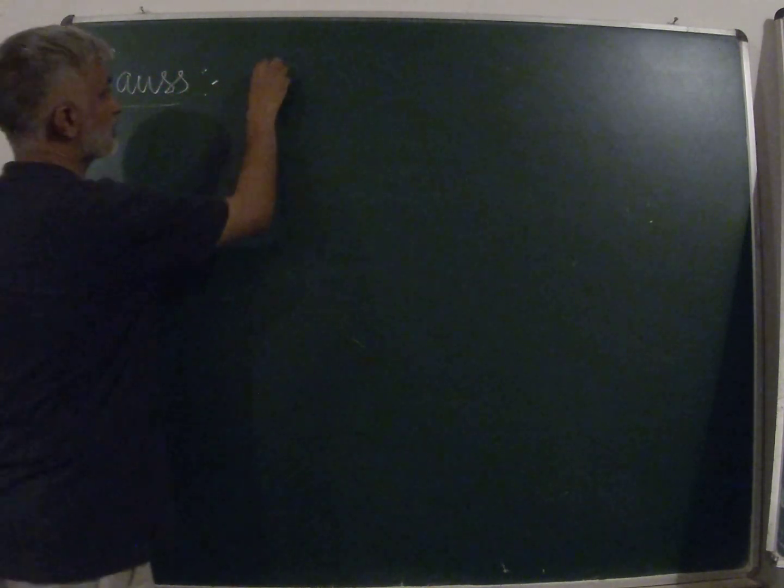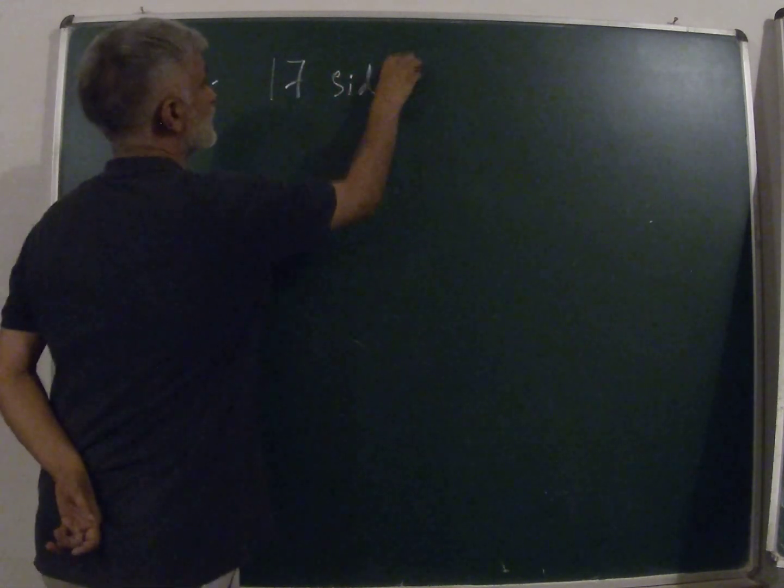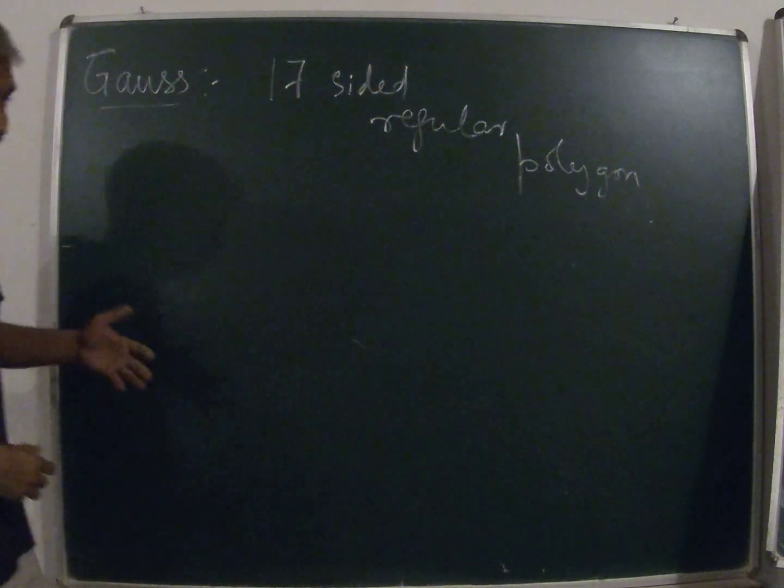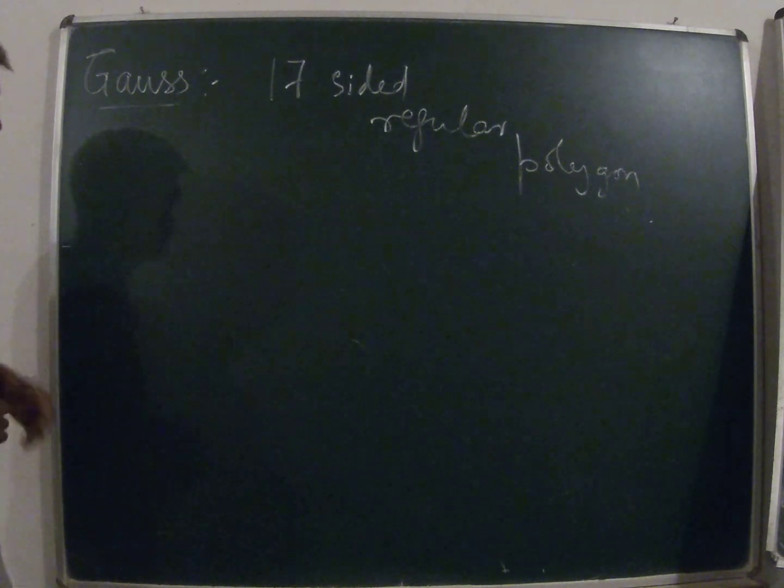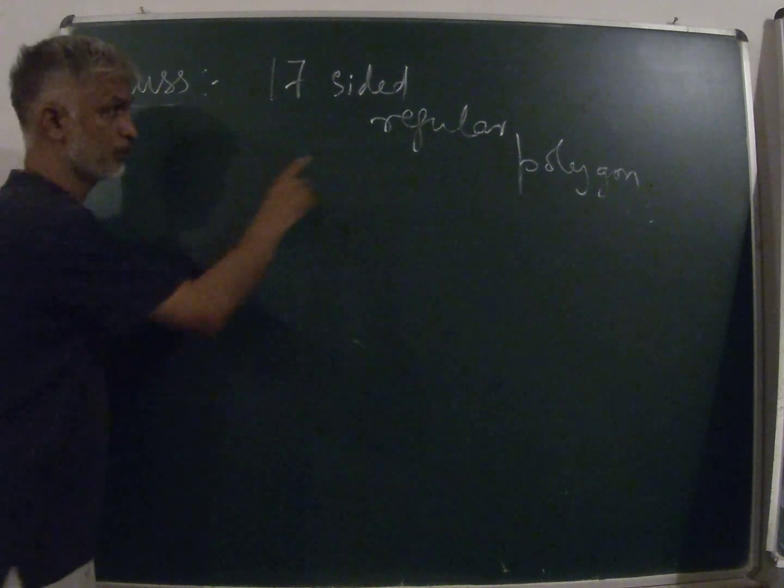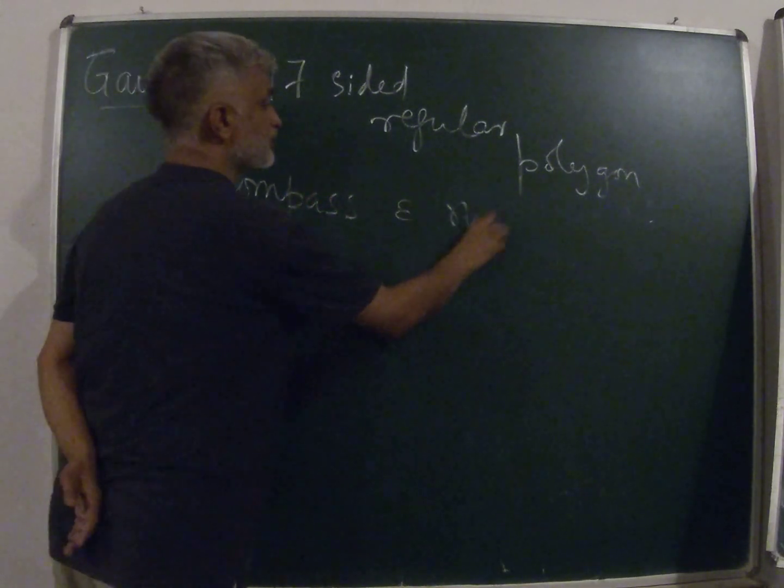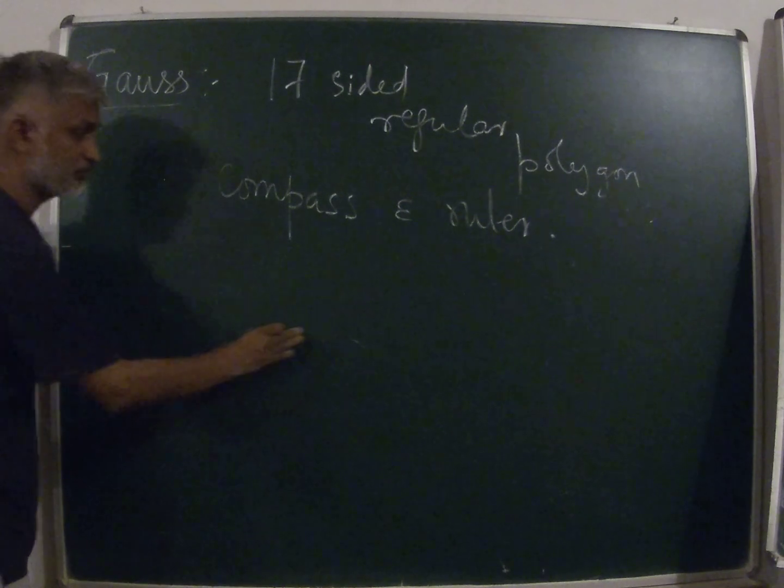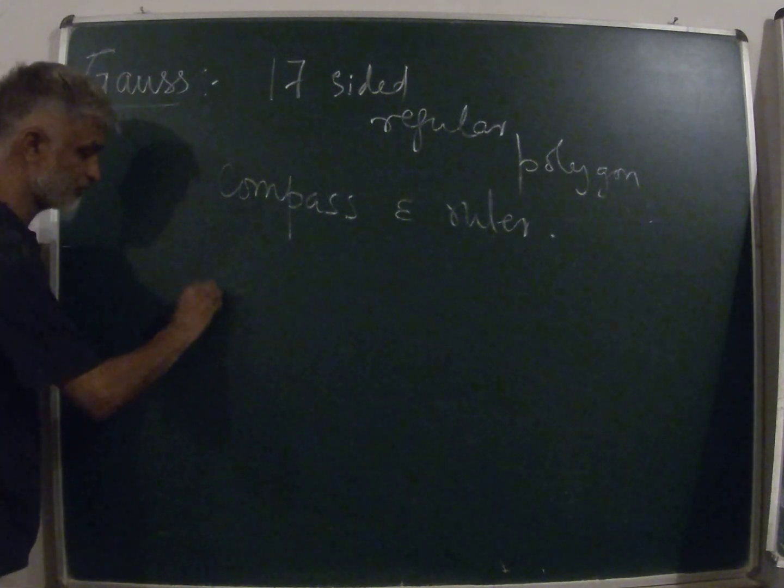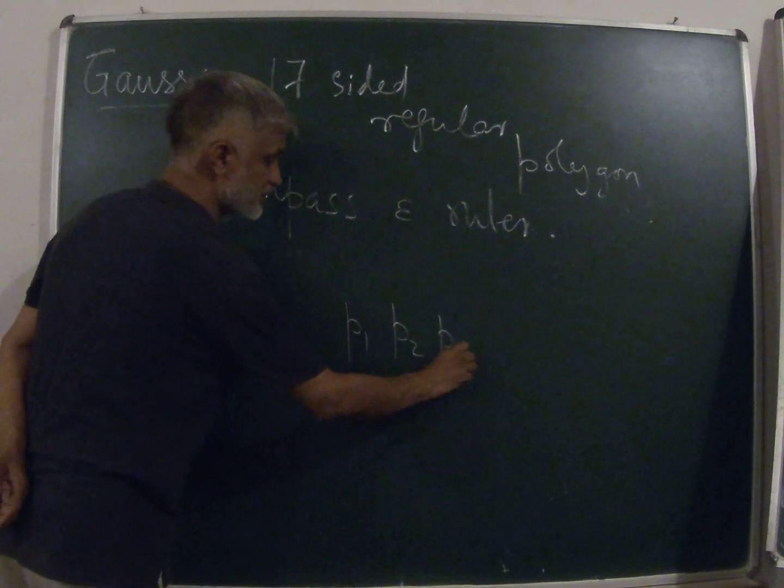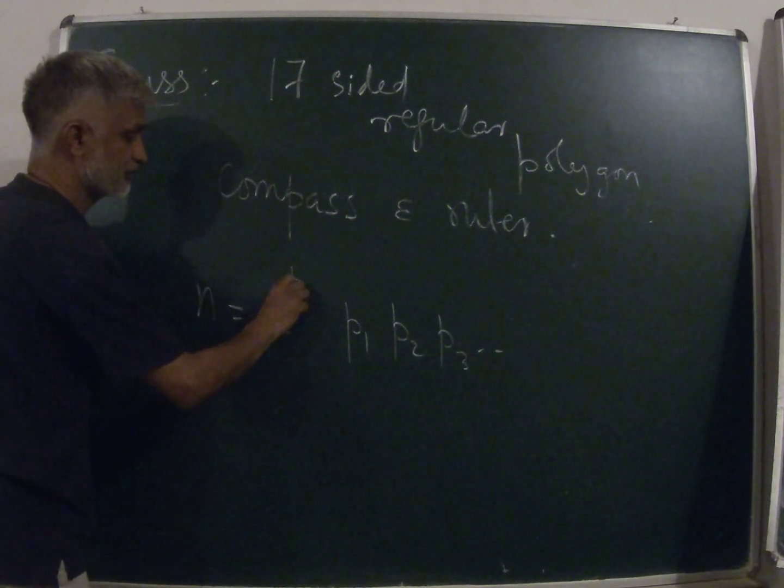Finally, there is this talk about the theorem of Gauss, who gave a construction for a 17-sided regular polygon. Gauss did this at the age of 24, and he was particularly proud of this achievement. The question, which lasted for a few centuries, was: which of the regular polygons can be constructed by compass and ruler? And Gauss was able to give a nice answer.